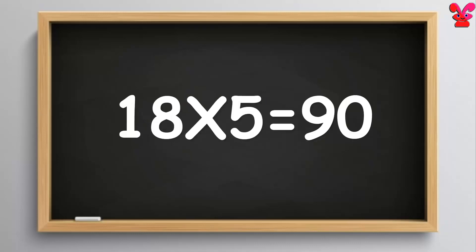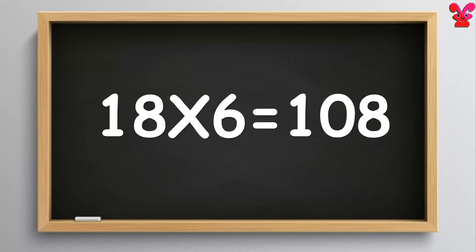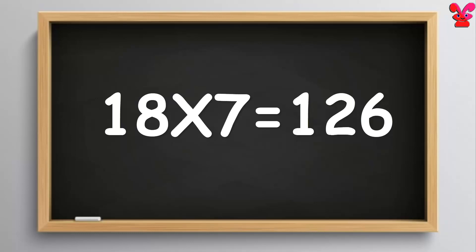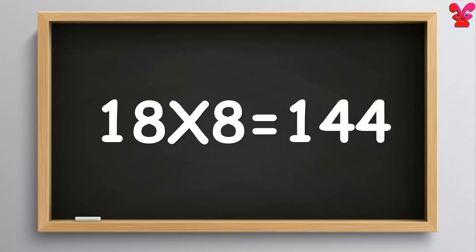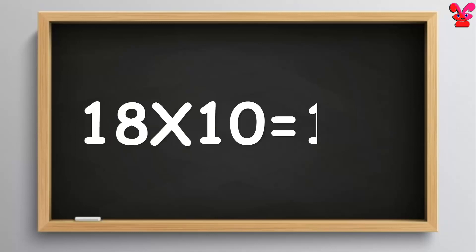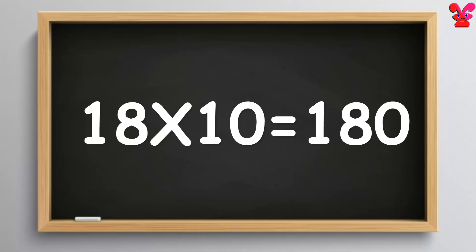18×4=72. 18×5=90. 18×5=90. 18×6=108. 18×6=108. 18×7=126. 18×7=126. 18×8=144. 18×8=144. 18×9=162. 18×9=162. 18×10=180. 18×10=180.